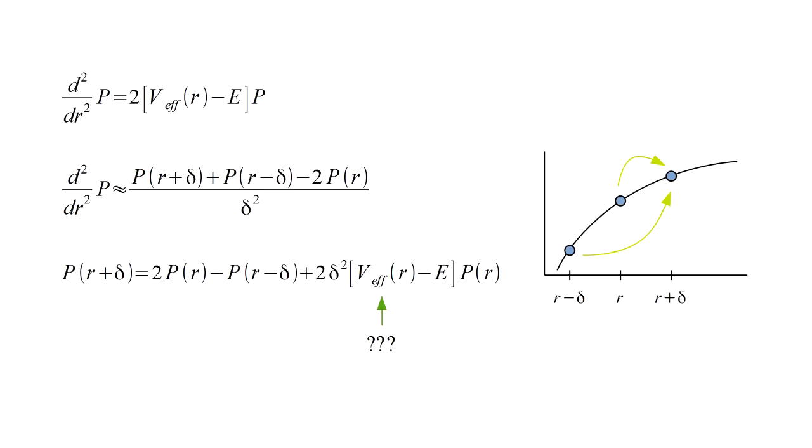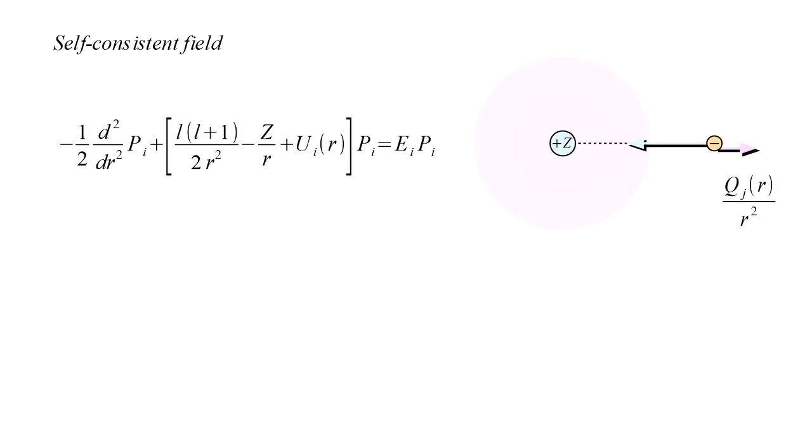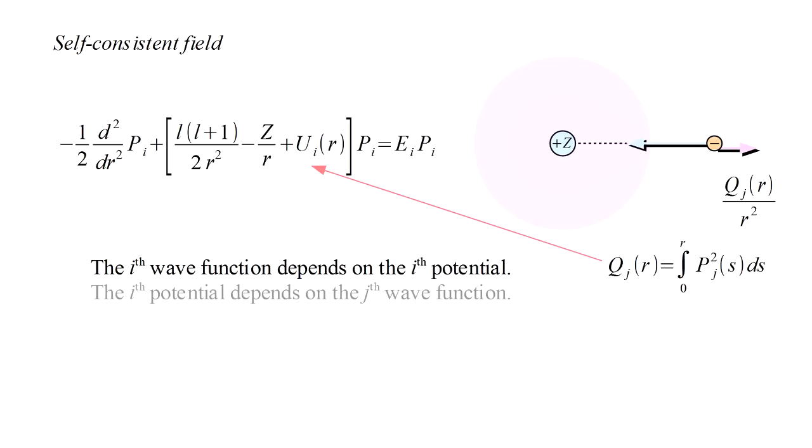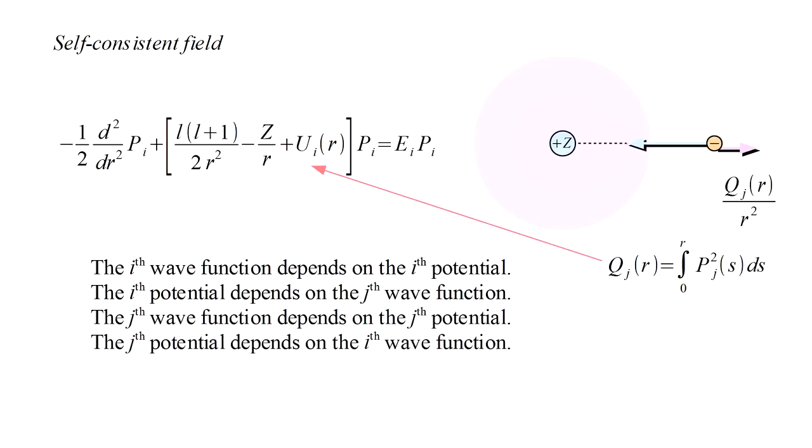With that problem solved, we turn to the chicken and egg issue of the effective potential. Hartree named his solution the method of the self-consistent field. The Hartree equation for the i-th electron depends on the repulsion it feels from each of the other electrons. For the j-th electron, this force depends on an effective charge q-sub-j. This effective charge depends on the j-th wave function, and this contributes to the i-th potential. So the i-th wave function depends on the i-th potential. The i-th potential depends on the j-th wave function. The j-th wave function depends on the j-th potential. But the j-th potential depends on the i-th wave function. So we have a circular set of problems.